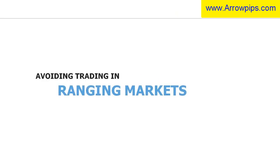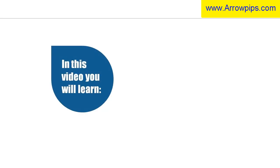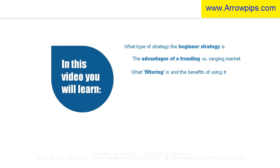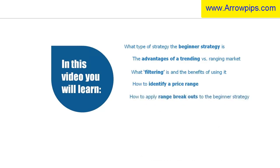Avoiding trading in ranging markets. In this video you will learn what type of strategy the beginner strategy is, the advantages of a trending versus ranging market, what filtering is and the benefits of using it, how to identify a price range, how to apply range breakouts to the beginner strategy, and how to filter trades using support and resistance.